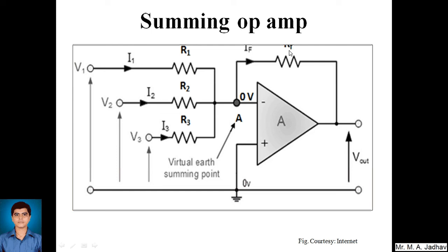The feedback resistor RF carries current IF from the output. To calculate Vout, we apply KCL at junction X. Since the non-inverting terminal is grounded at zero volts, by rule two the inverting terminal is also at zero volts — this is called virtual ground. So VX = 0 at junction X.